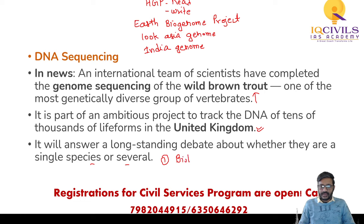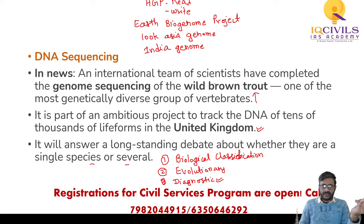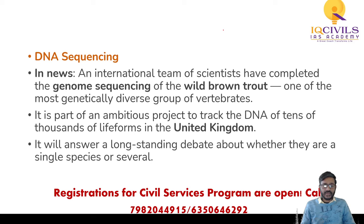DNA sequencing can be done for biological classification, for evolutionary studies, and for diagnosis. We are doing sequencing of different viruses and sub-variants for diagnosis purposes. These are the applications of DNA sequencing. The UK recently completed genome sequencing of the wild brown trout - that is why we are discussing this. The fish is also called Salmo trutta; it has only three to fifty species and thirty-eight to forty chromosomes.